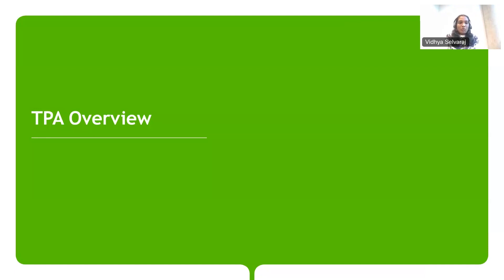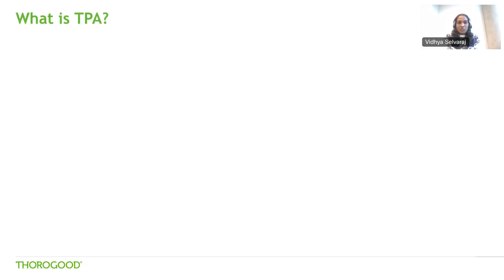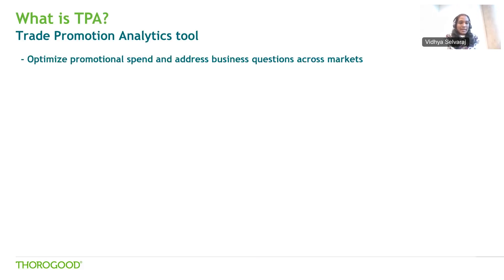In today's session, I will be covering an overview of the TPA tool. This trade promotion analytics tool is used for optimizing trade promotions, and I've been part of the team that delivered the solution. TPA stands for trade promotion analytics tool — a tool used to optimize your promotional spend and address business questions across markets. It has been designed to address important business questions required across multiple markets, and was rolled out for many large global markets, customized for each market to suit their business questions.